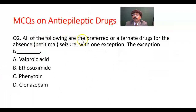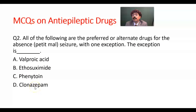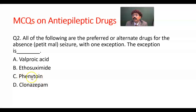Question number two: all of the following are the preferred or alternate drugs for absence conditions or petit mal seizure, with one exception. The exception is what? Valproic acid, ethosuximide, phenytoin, clonazepam. The answer should be phenytoin. Phenytoin may make the condition worse — it is not helpful for absence seizure and will make the situation worse. That is the exception.